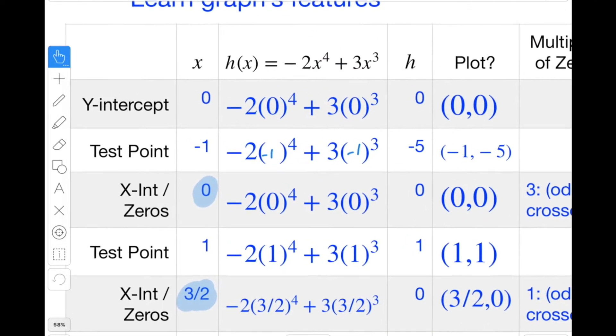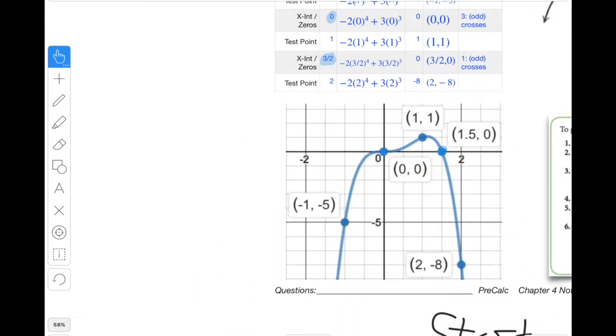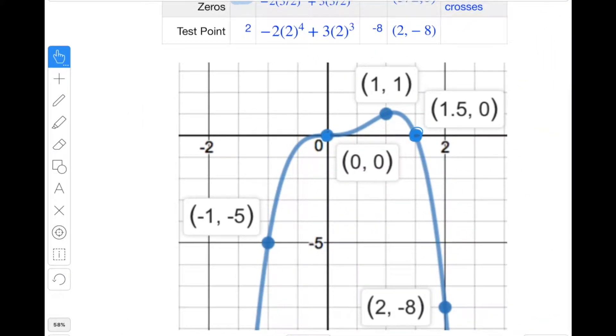And then once you graph those points, you can connect them. Another helpful little point that you can graph is the y-intercept. You can always plug zero into the function and see what you get out. In this particular case, you get (0,0). So the y-intercept has already been graphed as one of the zeros, but that's also useful to graph and an easy point to plot. And so after you get these points, then you can connect them here. You might not know immediately that the graph curves around like this just from the table, but you still get a pretty good idea that it goes like this in order to connect those points.